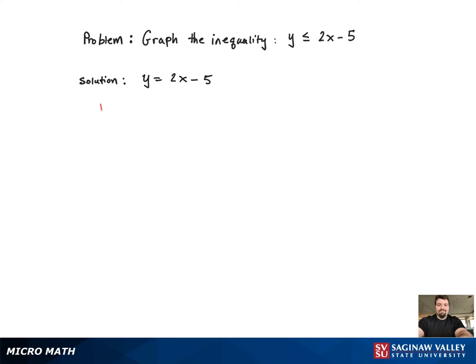So this line has a slope equal to 2, and it has a y-intercept of negative 5. So the graph is going to appear in just a moment.